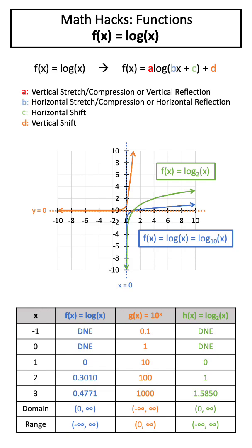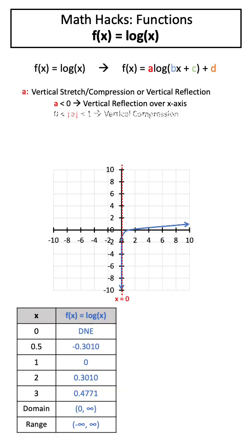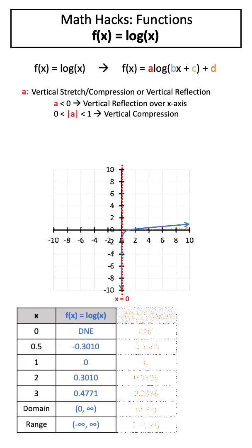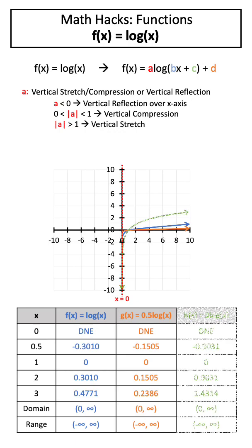Additionally, we can transform this function through a variety of mechanisms. If a is less than 0, this will vertically reflect our function over the x-axis. If the absolute value of a is between 0 and 1, this will vertically compress our function, whereas if the absolute value of a is greater than 1, this will vertically stretch our function.